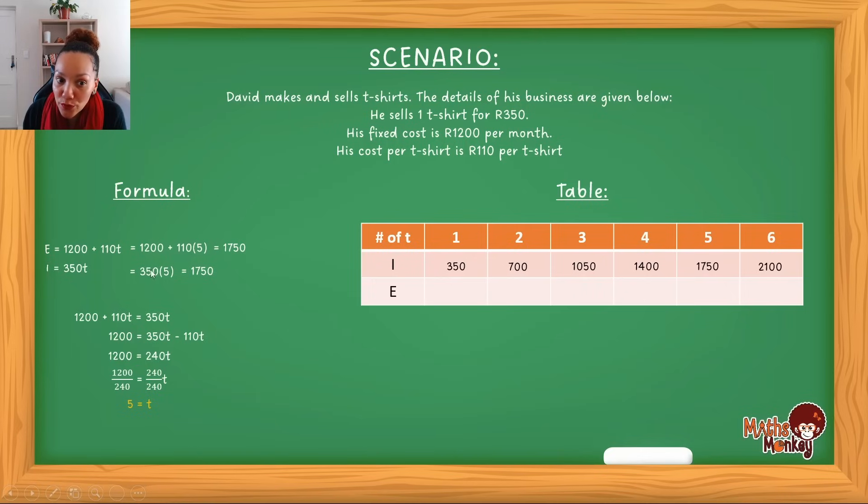So if I link this back to this situation, essentially in this formula, we would have said 350 times one for one t-shirt and it would have given us this answer. 350 times two and it gives us this answer. So I'm trying to just show you how these actually interlink. But for now, let's just quickly move away from the formula and let's just focus on the table quickly. So if I look at this now, I've got all my different values there for my income. Now let's look at our expenses.